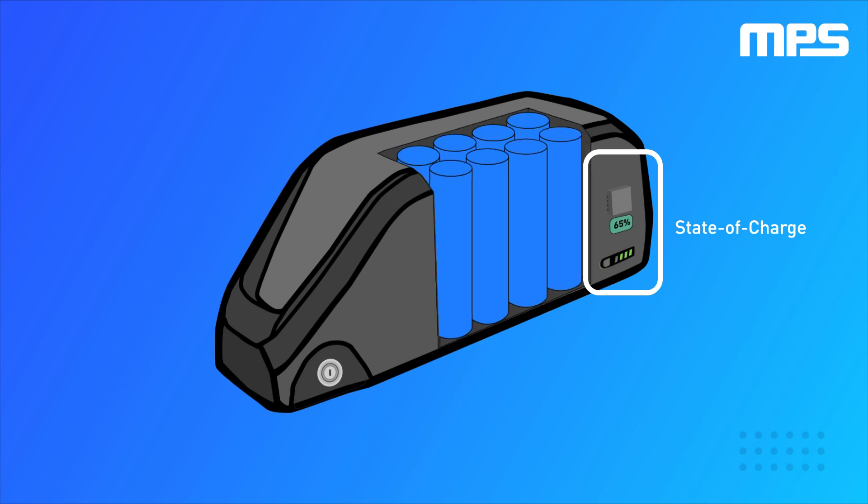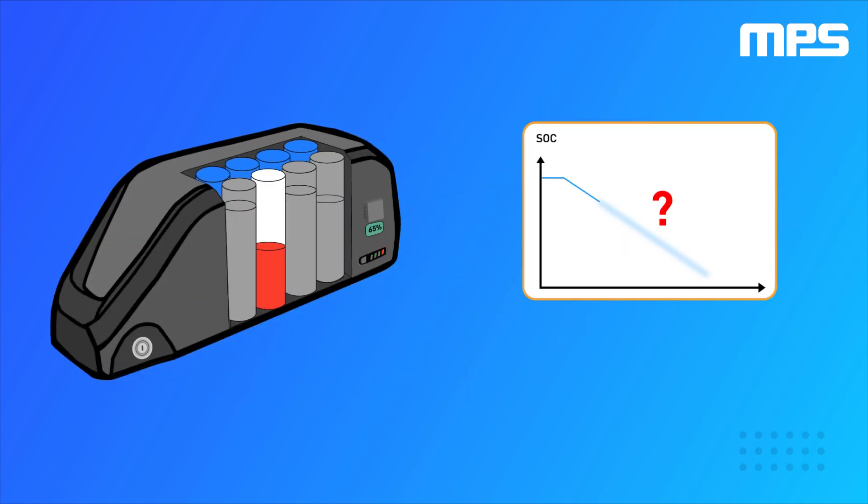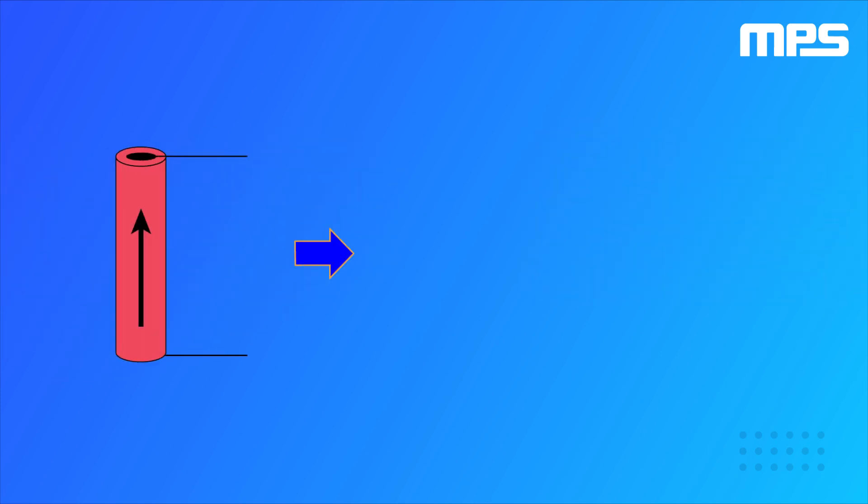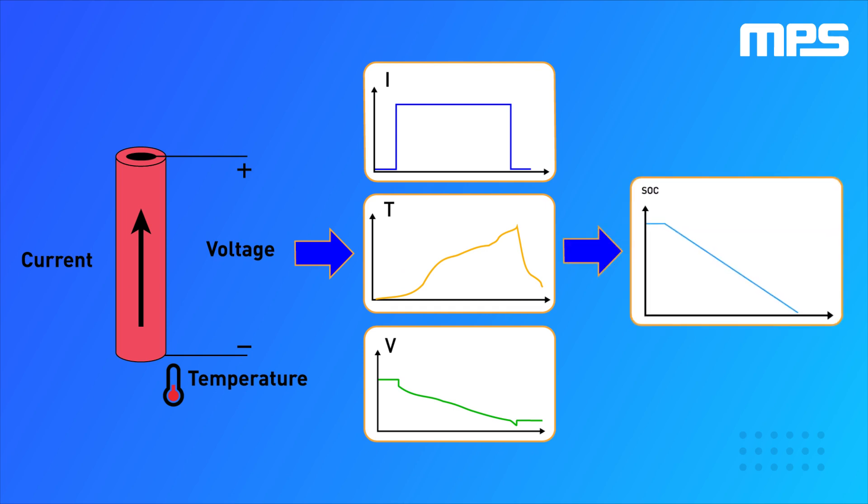However, a battery pack is built from a multitude of individual cells, and every cell may be operating under different conditions. This means that an accurate fuel gauge must track each cell individually. One of the problems with tracking state of charge is that it isn't a measurable magnitude. Instead, the fuel gauge uses measurable variables, such as current, voltage, and temperature, to estimate the state of charge.